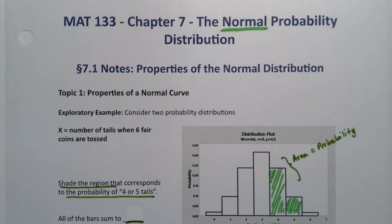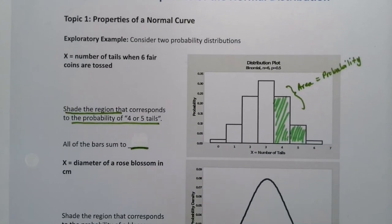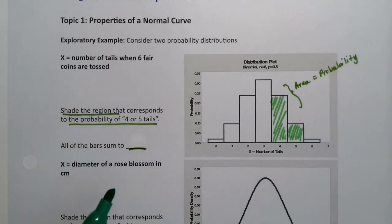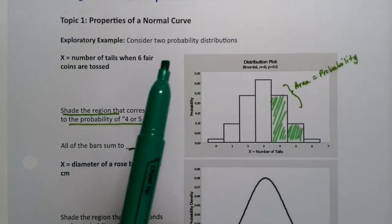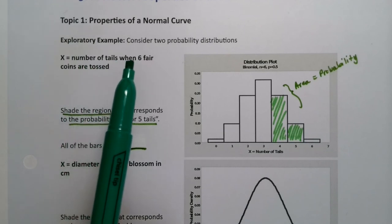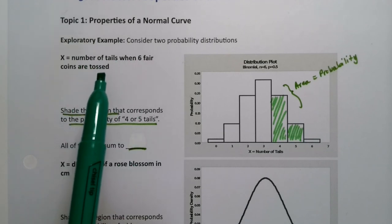To make this leap to the normal probability distribution, we want to take a moment and think about where we've been and where we're going. Let's look at these two probability distributions. This one is for the number of tails when six fair coins are tossed. Familiar, right? Because that's binomial.